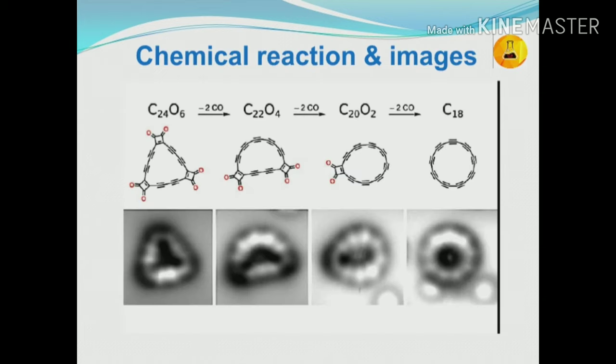The chemical reaction steps were: C24O6 minus 2 mol of CO gives C22O4; minus 2 mol of CO gives C20O2; minus 2 mol of CO gives C18.